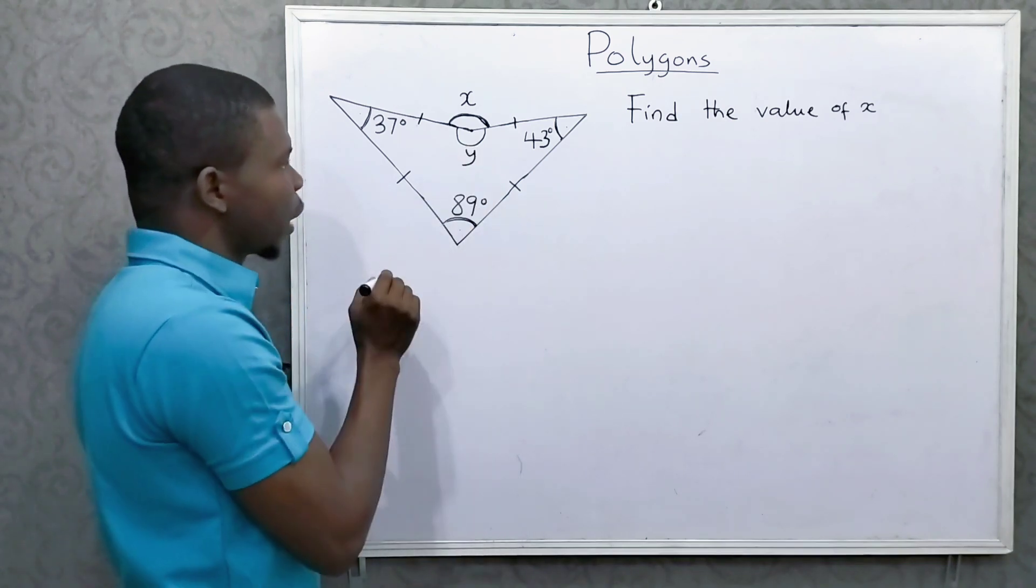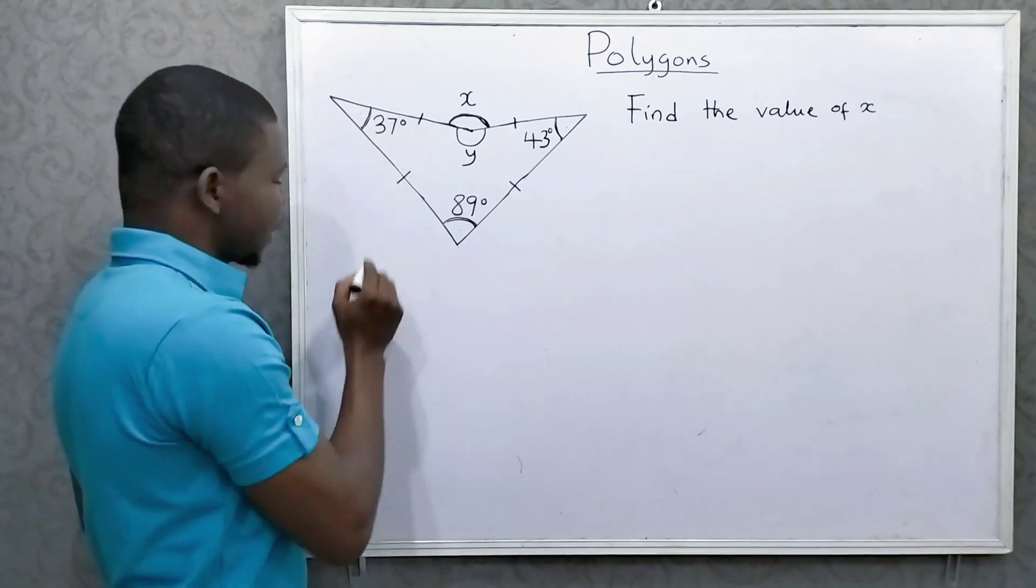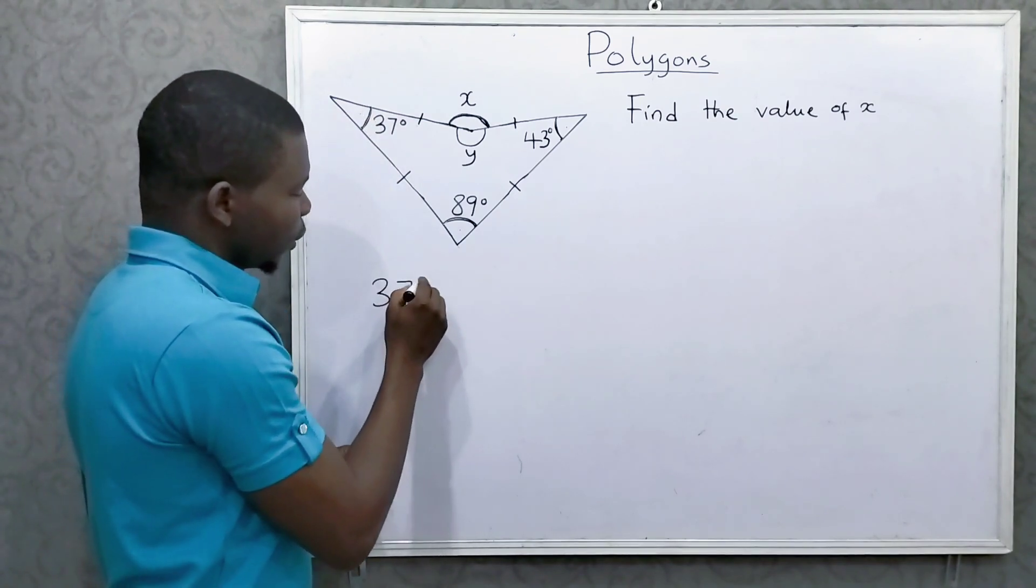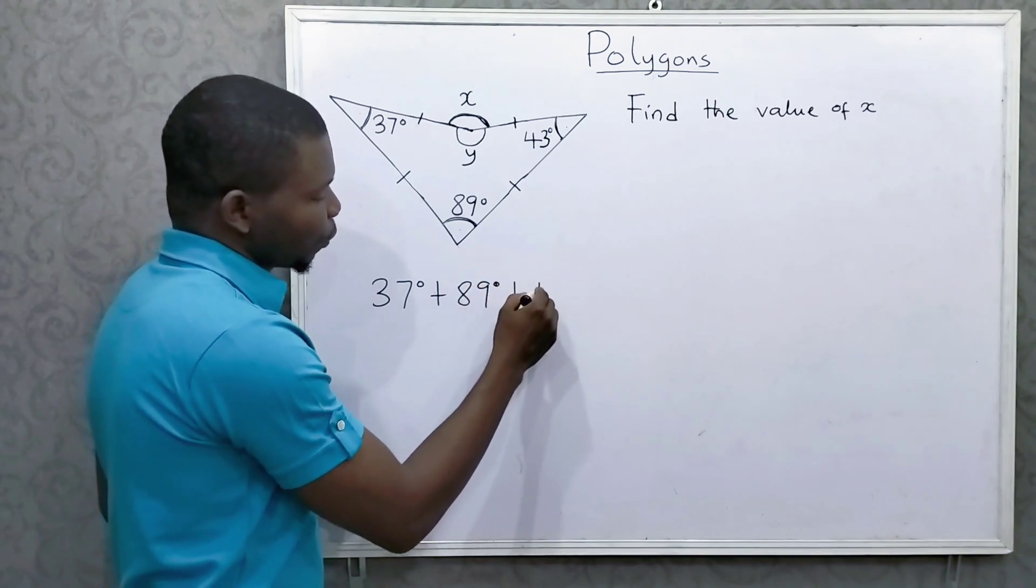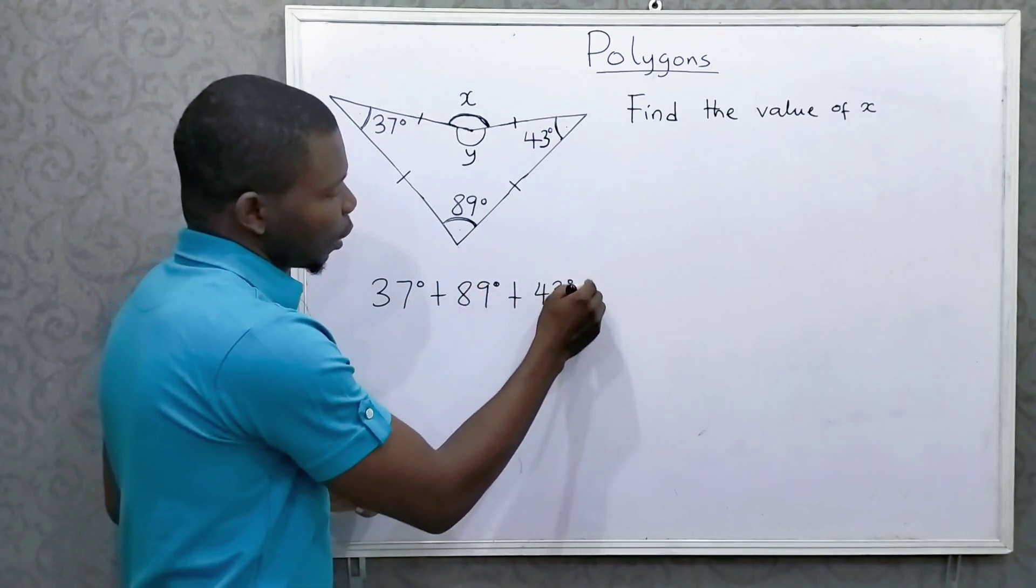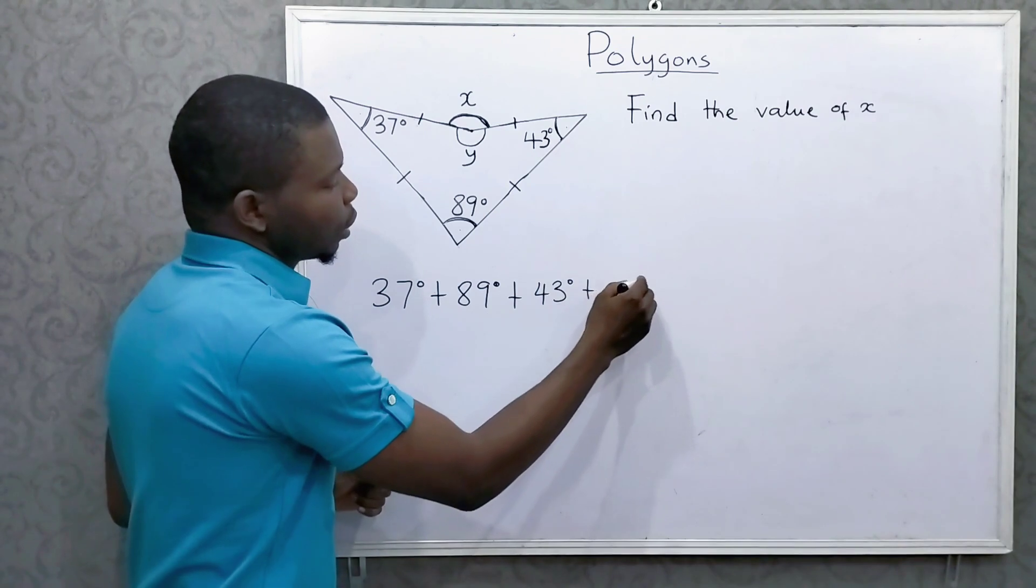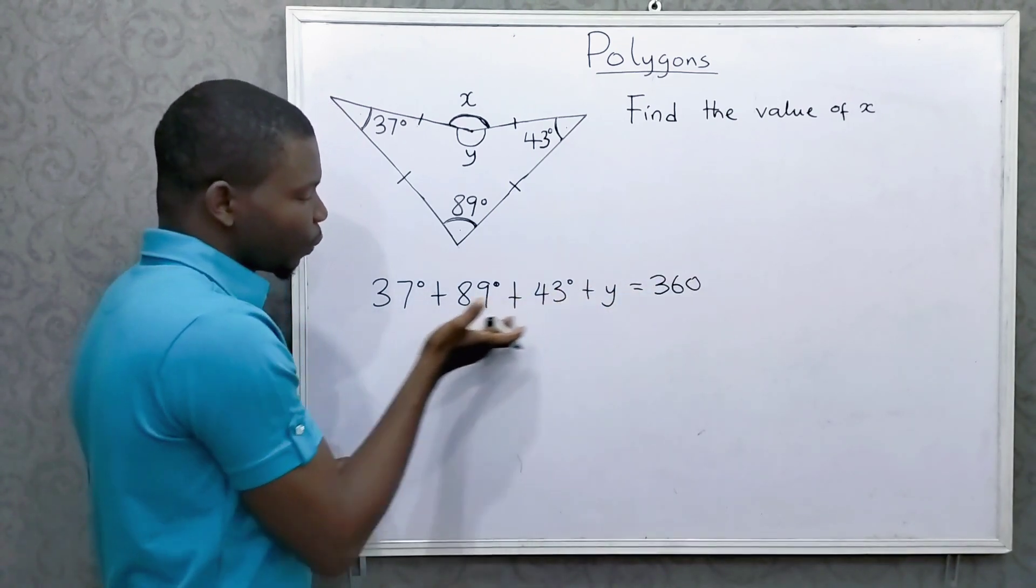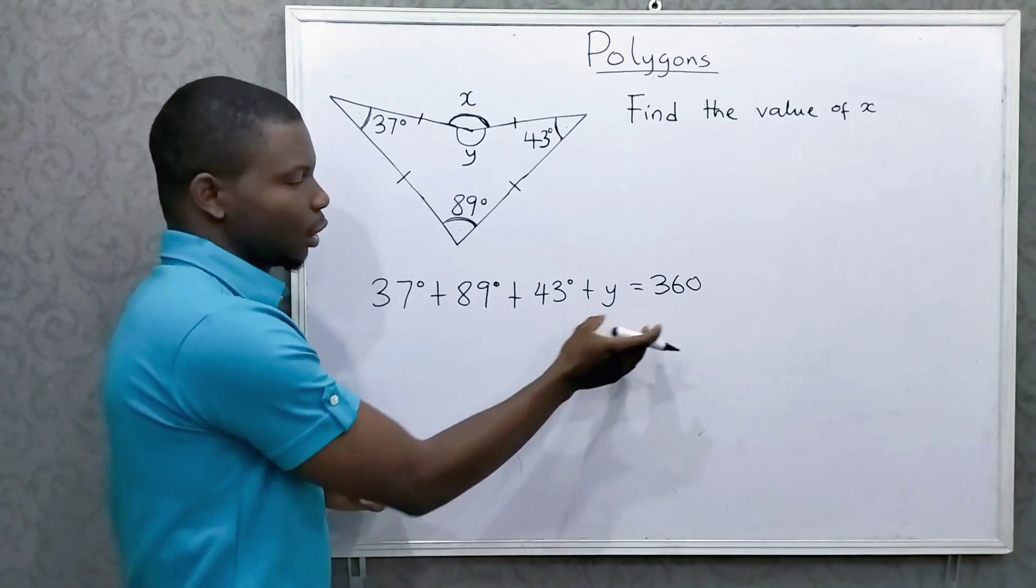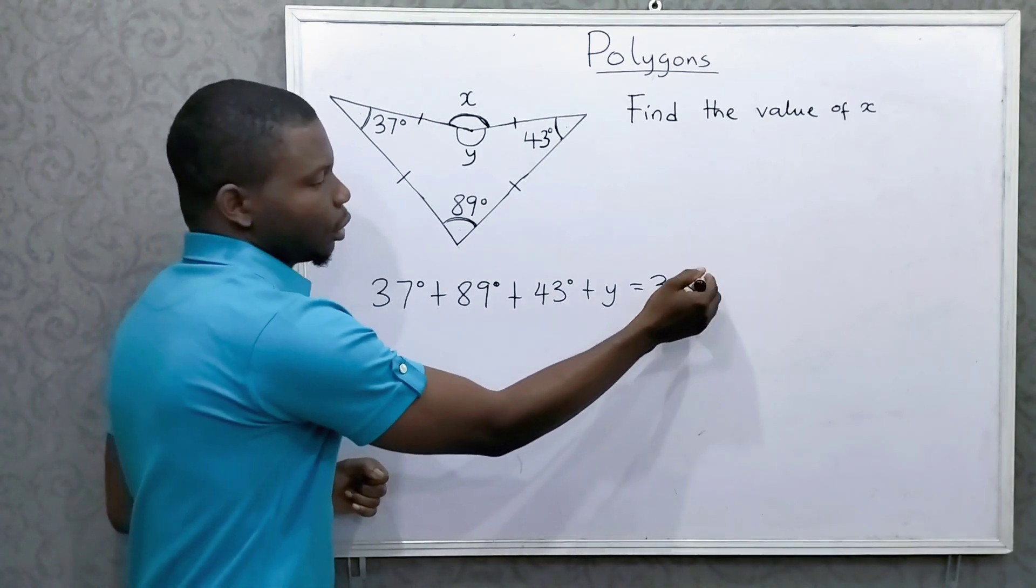Now, let me label this angle as y. So 37 plus 89 plus 43 plus y should give me 360. The reason is the sum of angles in a quadrilateral is equal to 360 degrees.